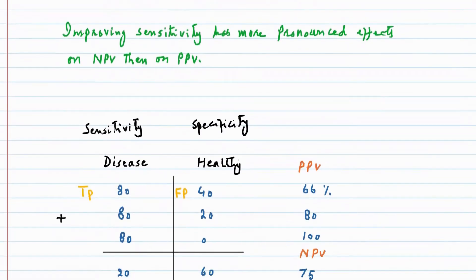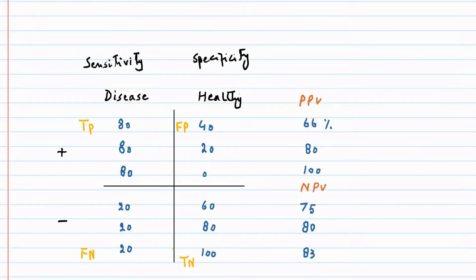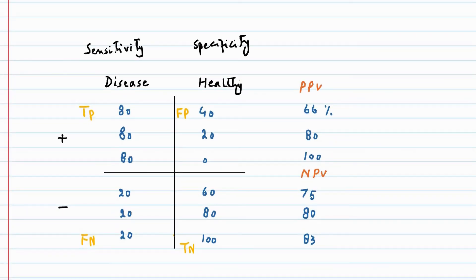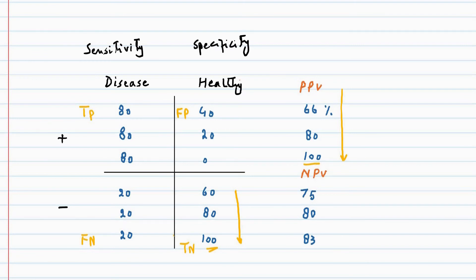Similarly, if we keep the sensitivity of the test constant, an increase in specificity will lead to a corresponding increase in positive predictive value. And when the specificity of the test reaches 100%, the positive predictive value also becomes 100%. There is some increase in negative predictive value, but this is not as marked as in the case of positive predictive value.